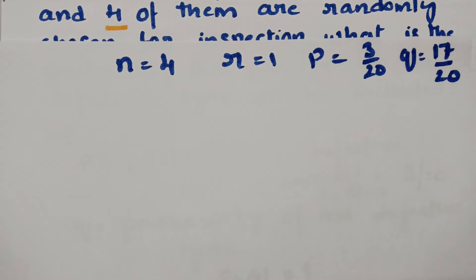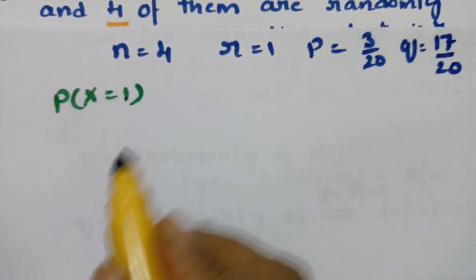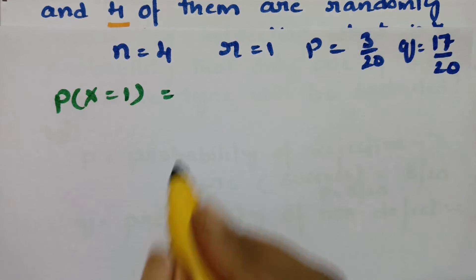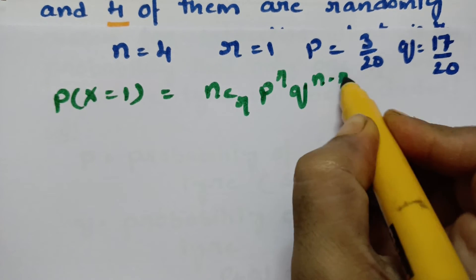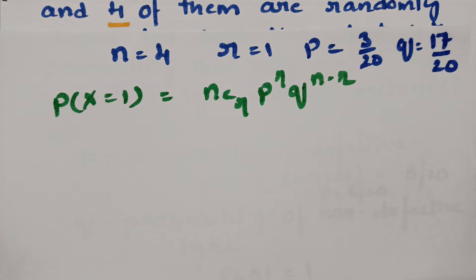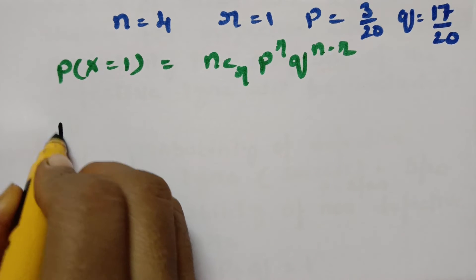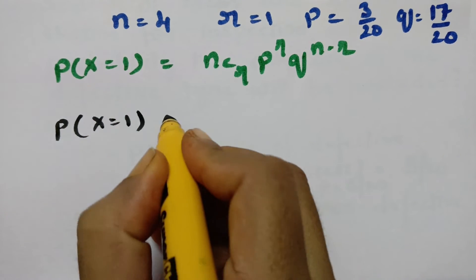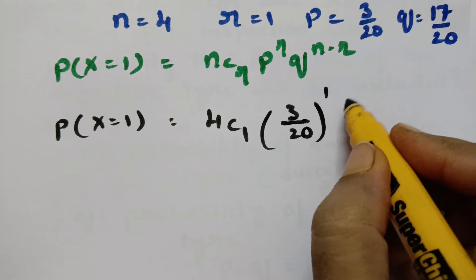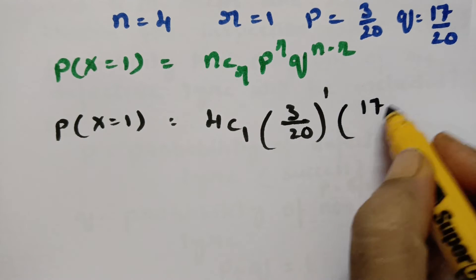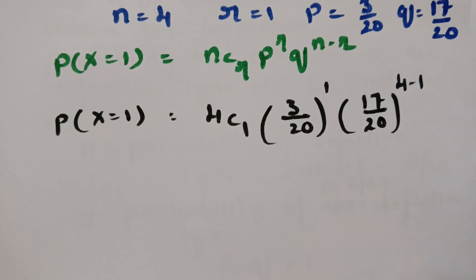We need to find the probability of X = 1. The binomial distribution formula is NCR × P^R × Q^(N-R). Substituting the values: N = 4, R = 1, P = 3/20, Q = 17/20. So we calculate 4C1 × (3/20)^1 × (17/20)^(4-1).